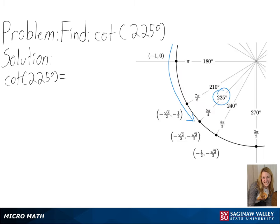Since we are finding the cotangent value, we will need to find the cosine over the sine value, or the x over the y value, since that will give us our cotangent value.